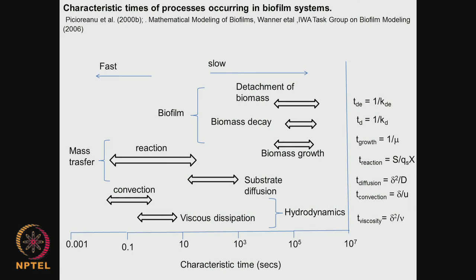We looked at different types of case studies testing various approaches to reduce bacterial attachment. Now, if you look at the entire biofilm formation process, there are many things happening. You have flow, mass transfer (movement of substrate), bacterial attachment, and bacterial detachment. These bacterial attachment and detachment processes may have a longer characteristic time, whereas mass transfer, diffusion, and hydrodynamics happen much faster with lower characteristic times. Biofilm growth, maturation, biomass growth, attachment, and detachment all operate at different time frames.